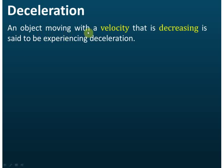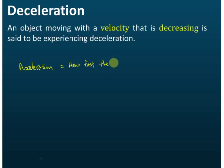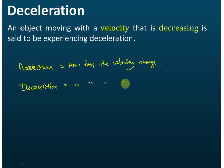Deceleration: an object moving with a velocity that is decreasing is said to be experiencing deceleration. Acceleration describes how fast the velocity changes — it can increase or decrease — but deceleration specifically describes how fast the velocity decreases.